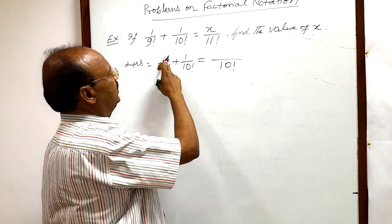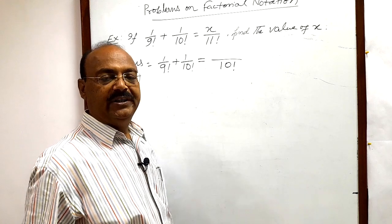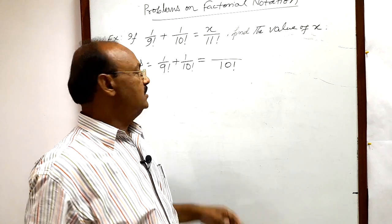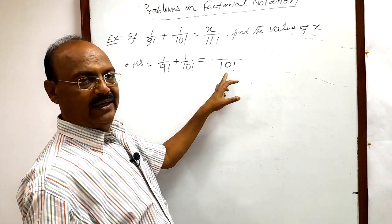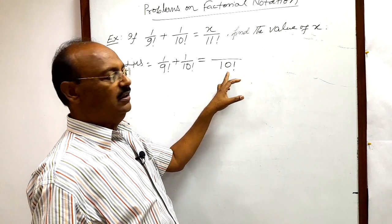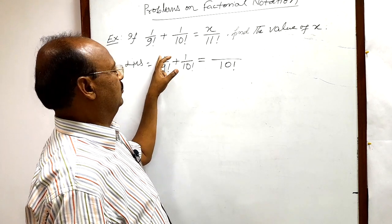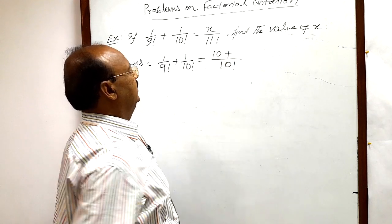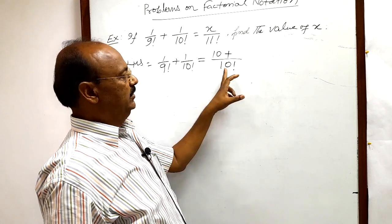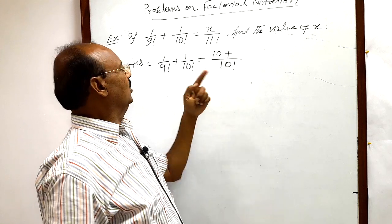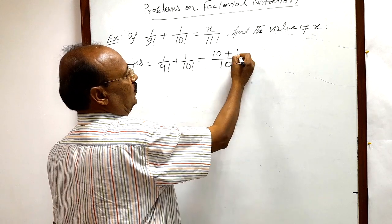Now what will be numerator here? You know the process, whenever we will divide this LCM with this denominator 9 factorial, how much you will get, 10, and that 10 will be multiplied with 1. So this will be 10, and here 10 factorial divided by 10 factorial one time, 1 into 1 is 1.